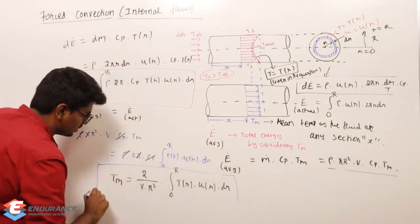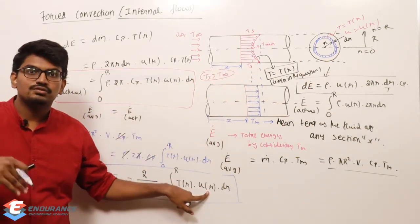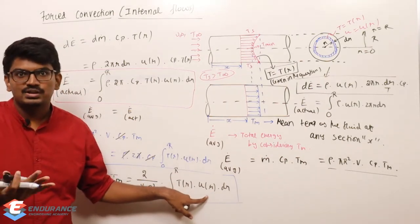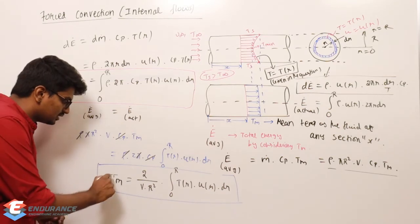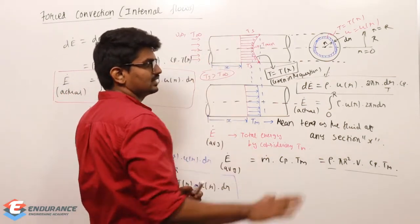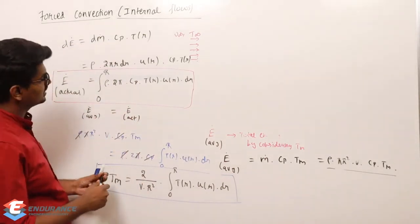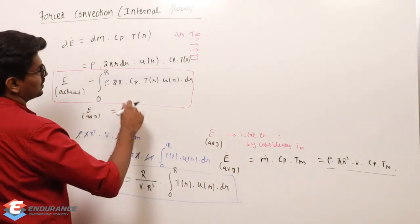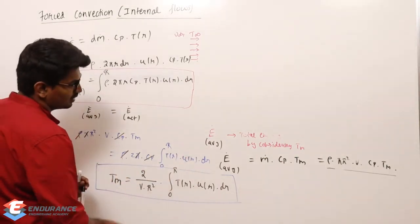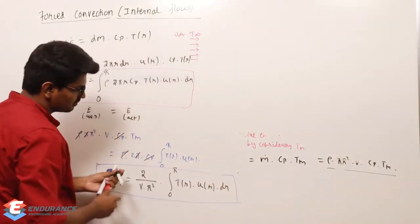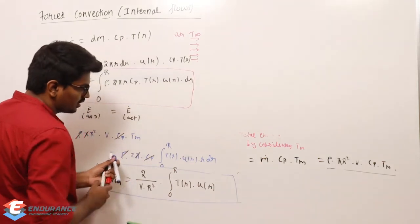There is one correction: I forgot to include the factor r in the elemental area term. The correct integral includes r·dr, so the final formula is Tm = (2 / (V·R²)) × ∫₀ᴿ T(r)·U(r)·r·dr. This is the formula for finding mean temperature at any section x.